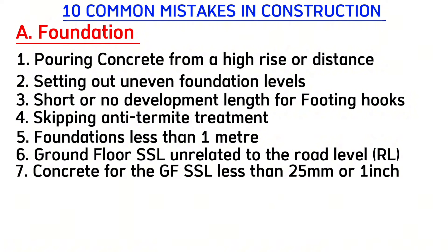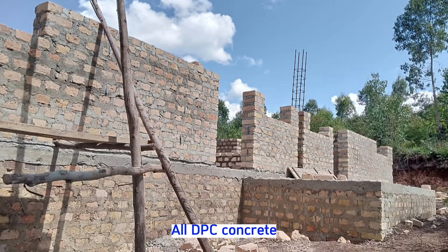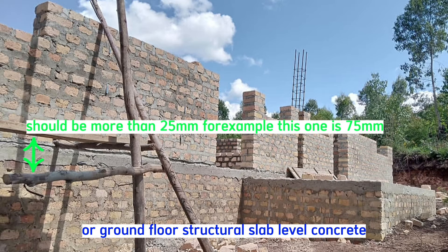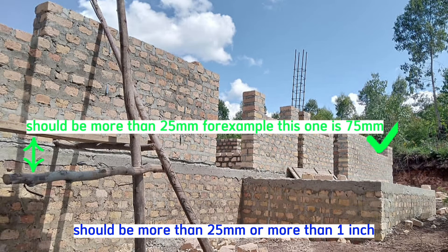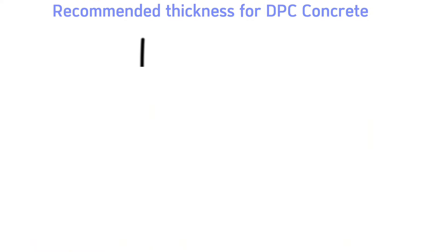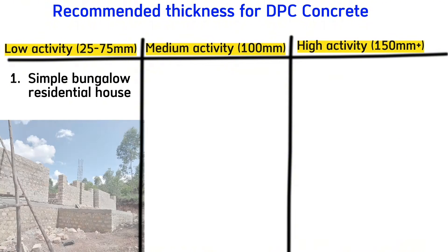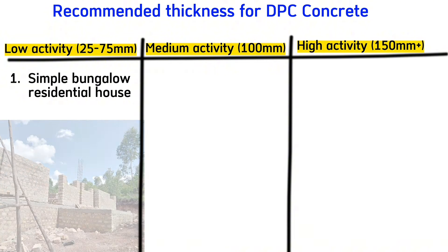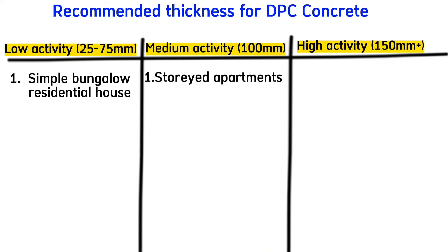Common mistake number seven is casting concrete for the ground floor structure slab at less than 25 millimeters or less than one inch. All DPC concrete, ground floor structure slab, or oversight concrete should be more than 25 millimeters. The thickness varies by purpose — for a simple residential house you could make it 25 millimeters, and for a three-story apartment you could make it 100 millimeters, as there is not a lot of activity on that floor.